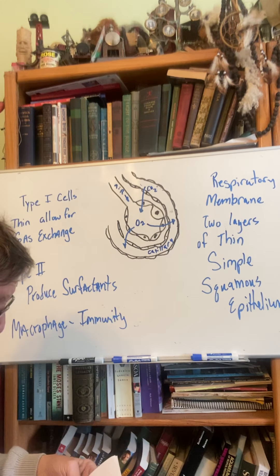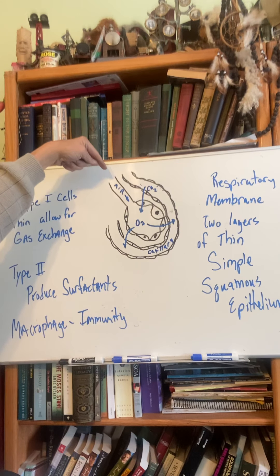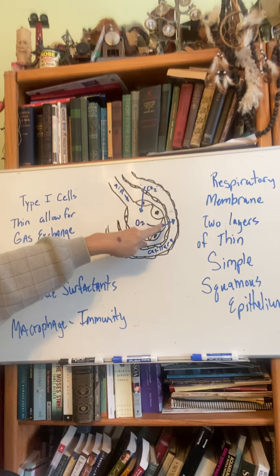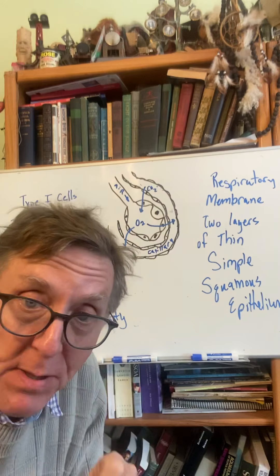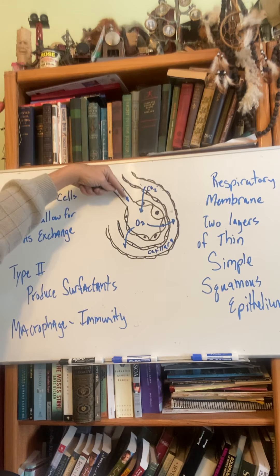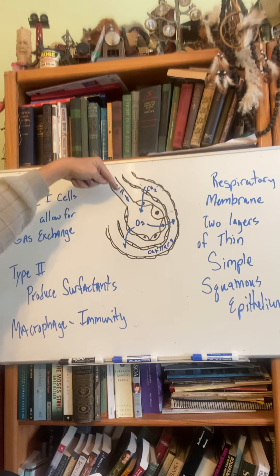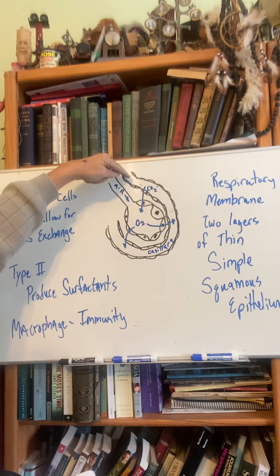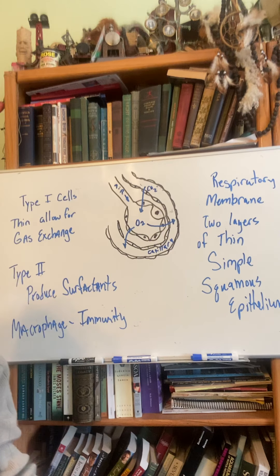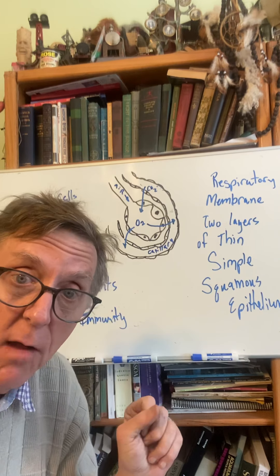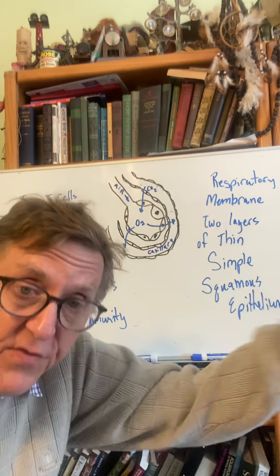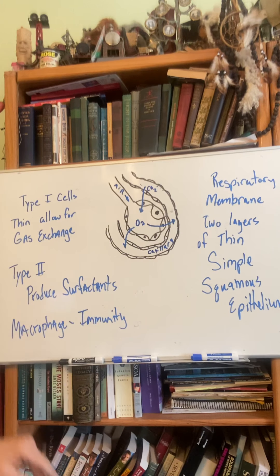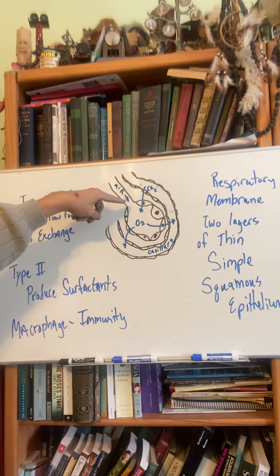I've drawn a picture of a respiratory bronchiole and an alveoli. Associated with the alveoli and the primary bronchioles, there are capillaries. So in addition to the respiratory bronchiole with the air path shown here into the alveolus, I've also drawn a capillary. I'm trying to show first of all what kinds of cells are present in the alveoli.